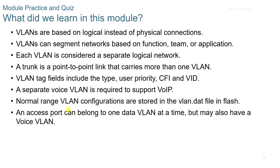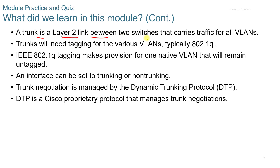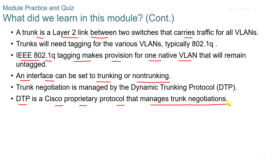In summary, VLANs are logical — each VLAN is considered a separate logical network. VLAN tag fields include type, user priority, CFI, and VID. An access port can belong to one data VLAN at a time but may also have a voice VLAN. A trunk is a layer 2 link between two switches. IEEE 802.1Q tagging makes provisions for one native VLAN. An interface can be set to trunking or non-trunking. DTP is a Cisco proprietary protocol that manages trunk negotiations.